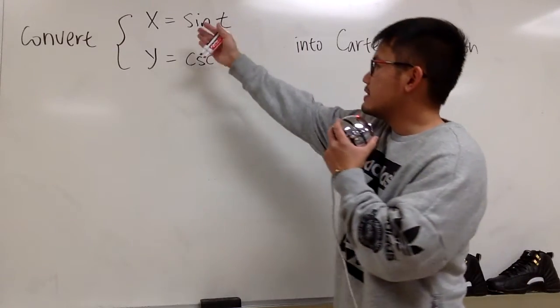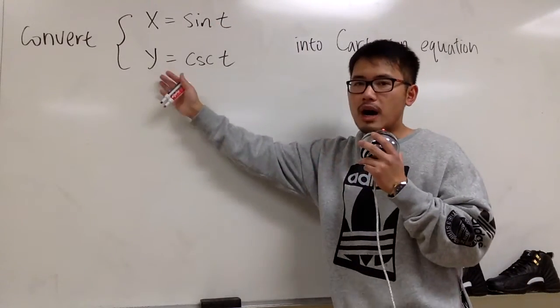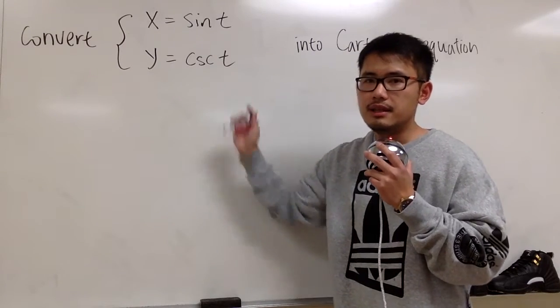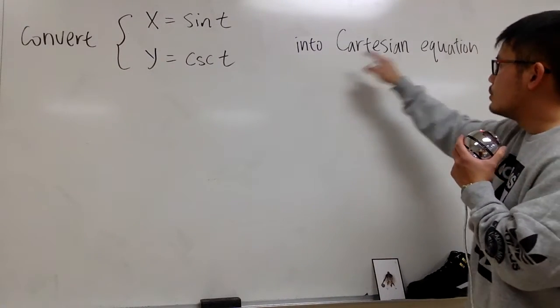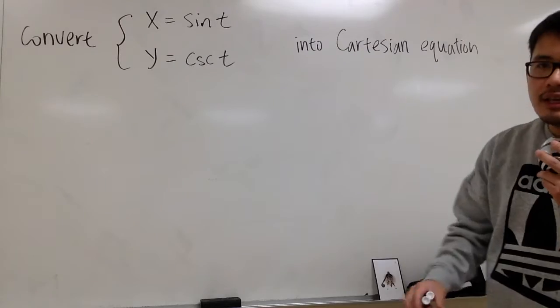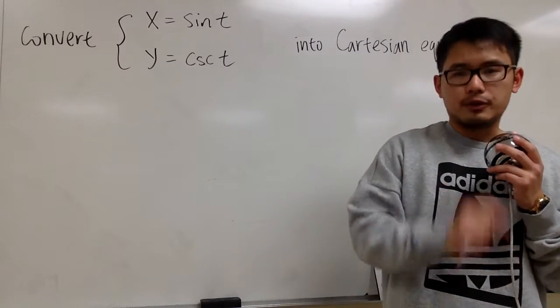Let's look at another one. Here we have x equal to sine t, and then we have y equals to cosecant t. We want to change this into Cartesian equation, so at the end we want to have an equation with just x and y only.